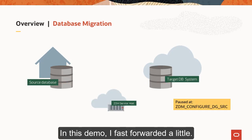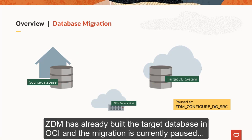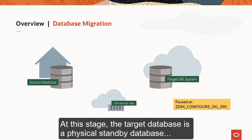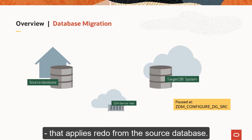In this demo, I fast forwarded a little. ZDM has already built the target database in OCI and the migration is currently paused at the phase ZDM Configure DG Source. At this stage, the target database is a physical standby database that applies redo from the source database.